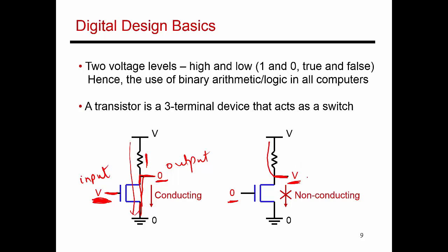You'll see that this single transistor can essentially implement an inverter logic or an inverter circuit. Whatever input voltage I give here, the exact opposite voltage is seen at the output. When I give an input voltage of 0, I see an output voltage of V and vice versa. So this single transistor implements an inverter circuit. I can use multiple transistors to also implement AND and OR circuits.